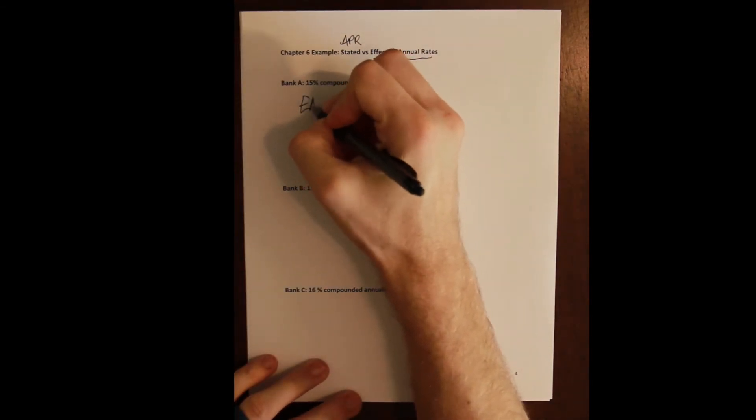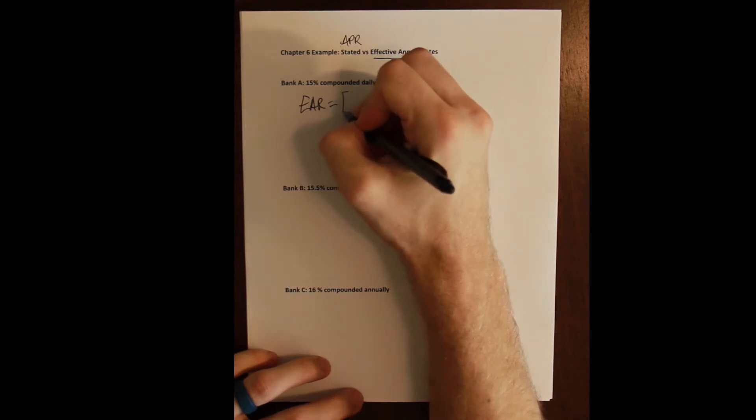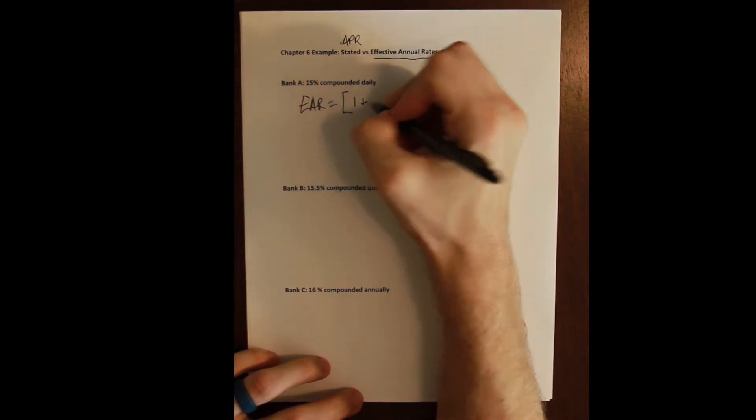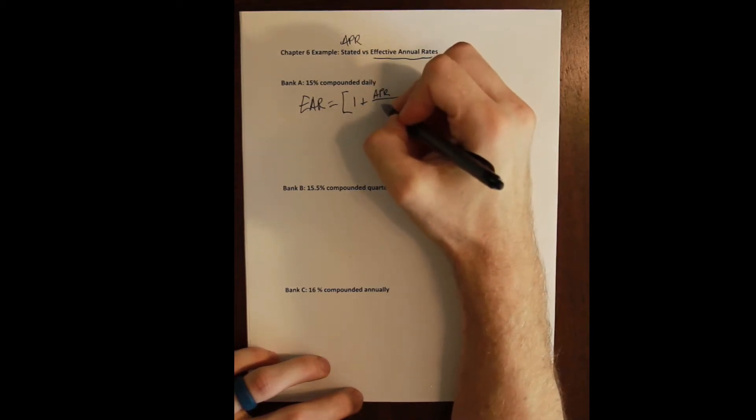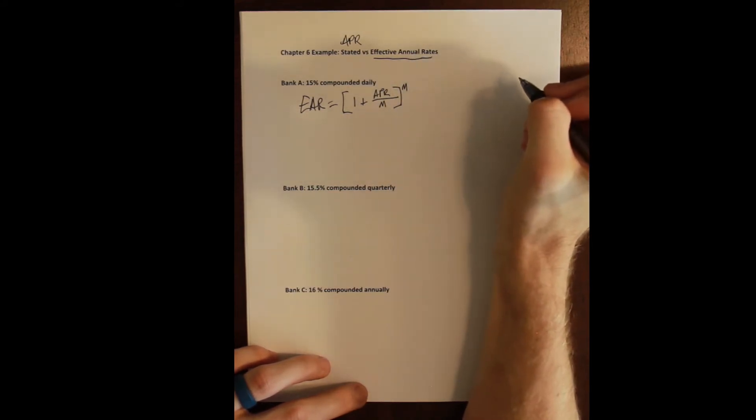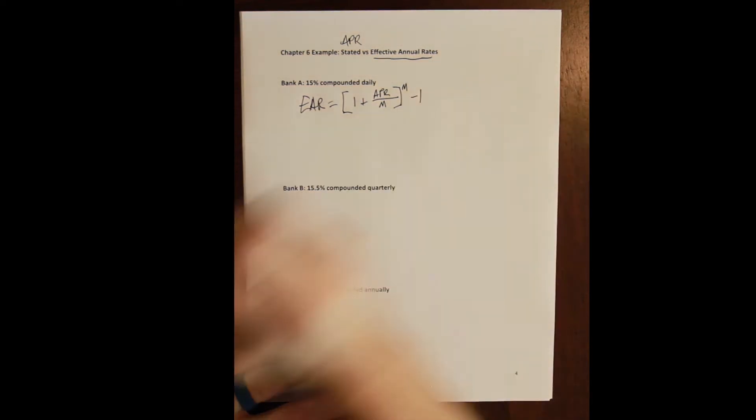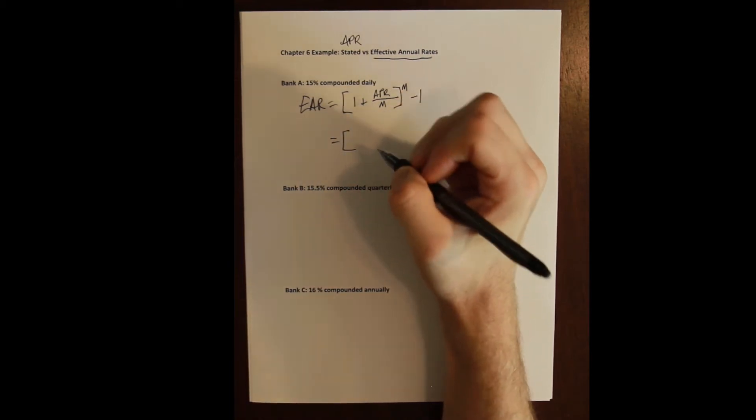We'll do it with the formula and then I'll show you how to use the calculator. The EAR, or effective annual rate, formula says that it is equal to one plus the APR divided by the number of compounding periods per year, which we call M, raised to the number of compounding periods per year minus one.